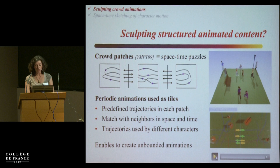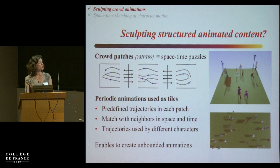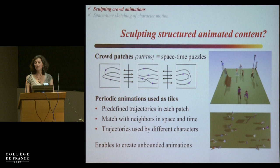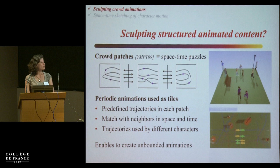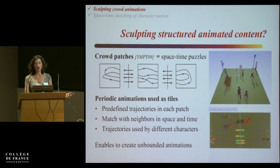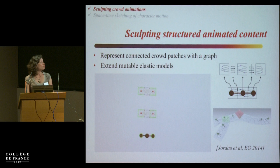If you put together several of these crowd patches, you get a populated scene. If you remove the border, you don't see where the border between the crowd patches is. The repetitivity of the trajectory, which is all periodic, is hidden because different characters are running on these trajectories. The advantage of using crowd patches is that it enables you to create unbounded animation — unbounded in space and unbounded in time because it's all periodic motion. Our first attempt was to reuse the mutable elastic model demonstrated for the castle, but for this animated content.